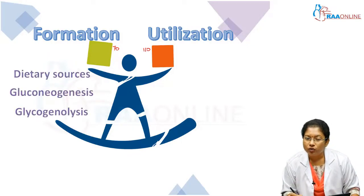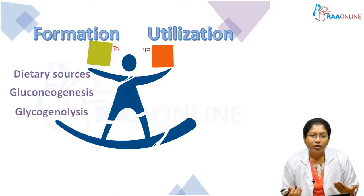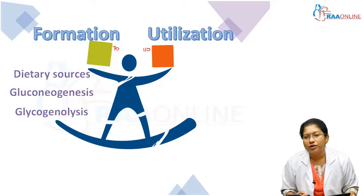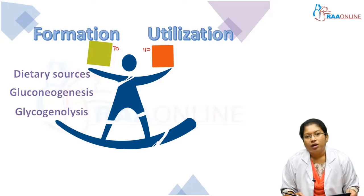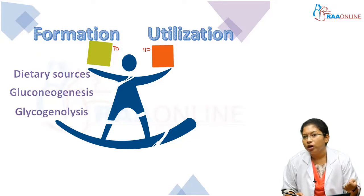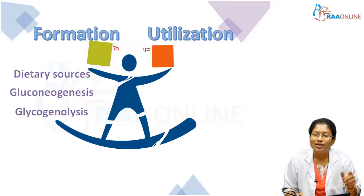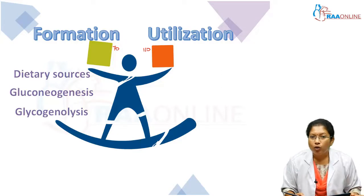Formation comes from dietary sources. When we eat dietary carbohydrates like rice, potatoes, etc., these are converted into simple monosaccharides by digestion and absorption. Carbohydrates in the form of starch, lactose, fructose, sucrose, maltose, etc. are all digested to simple monosaccharides like glucose, galactose, and fructose. They are then absorbed in the intestinal cells and enter the circulation.